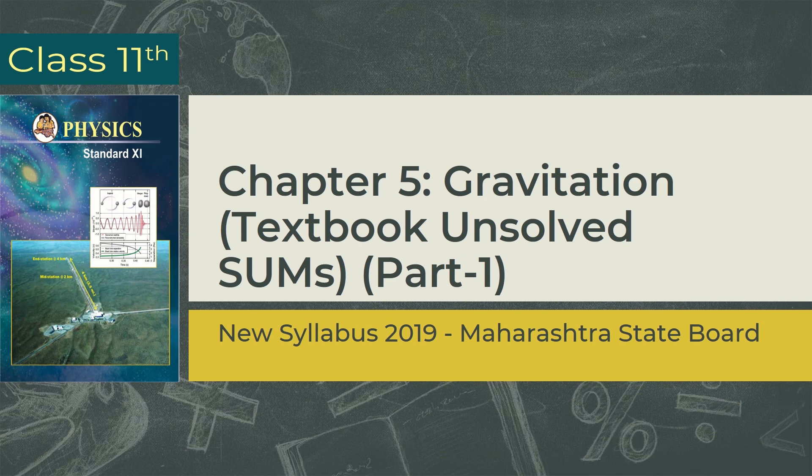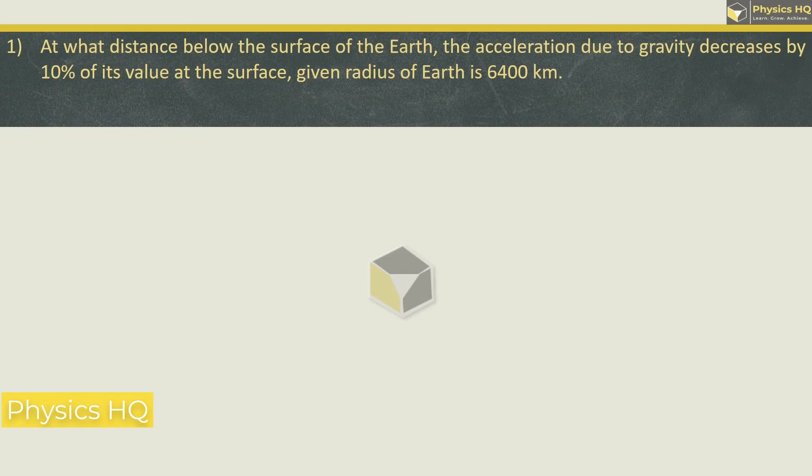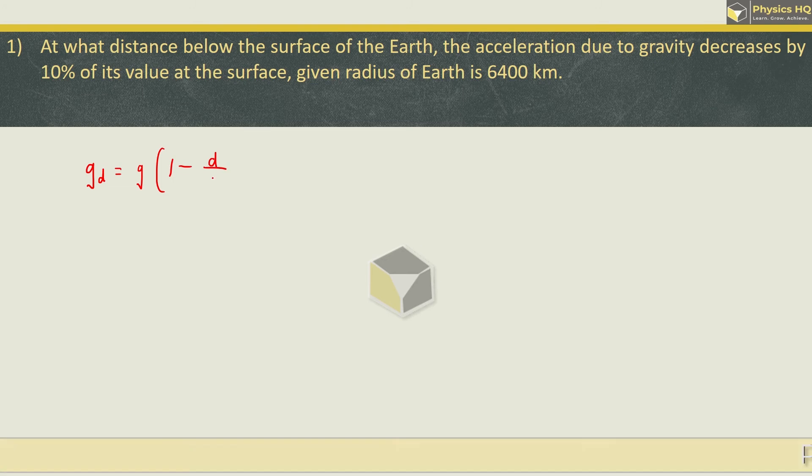Let us start with the first sum. At what distance below the surface of the Earth does the acceleration due to gravity decrease by 10% of its value at the surface, given the radius of the Earth is 6400 km. So gravity at depth is given by the gravity on the surface, 1 minus the depth divided by the radius of the Earth. This is the formula.